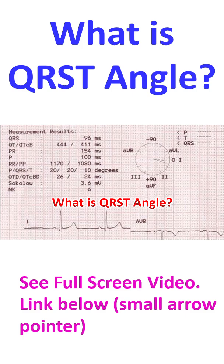In the frontal plane, the QRST angle is between the QRS vector and the ST-T wave vector. The QRST angle is less than 90 degrees in females and less than 107 degrees in males. Corresponding to this, there is a spatial QRST angle in three dimensions, which will be a solid angle.